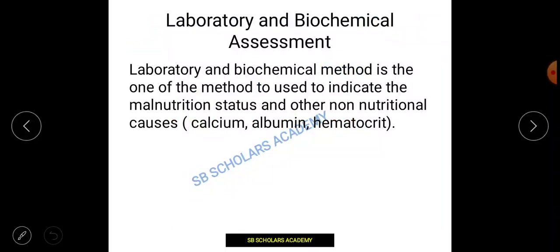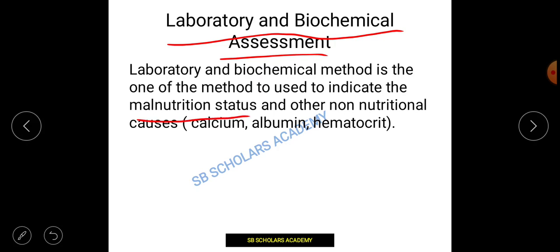Today we will discuss the third part of nutritional assessment, that is the laboratory and biochemical assessment. We have already discussed in our previous videos anthropometry and clinical examination. Today we will discuss the laboratory method, biochemical assessment, and dietary method. In the laboratory method, chemicals are tested through methods which indicate whether a particular individual or population has a nutritional status — whether it is malnutrition, non-nutrition, or otherwise.